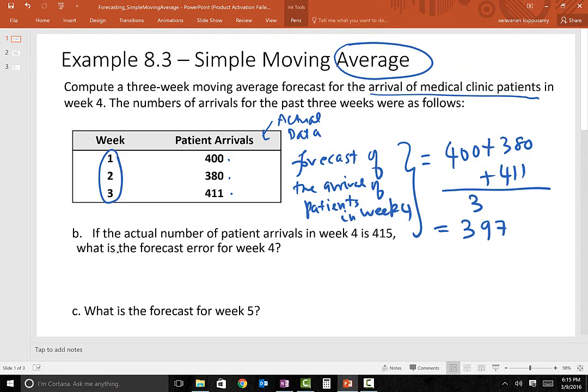Let's take a look at the second part of this question. If the actual number of patient arrivals in week four is 415, what is the forecast error for week four? Forecast error is nothing but actual data minus the forecasted data. So we had 415 customers arriving at the clinic, forecasted value is 397, so the forecast error is 18.